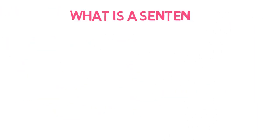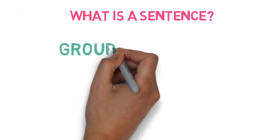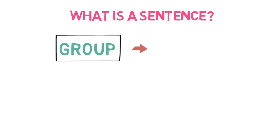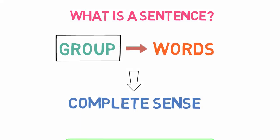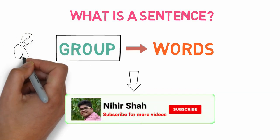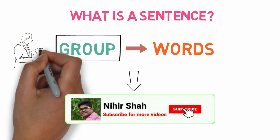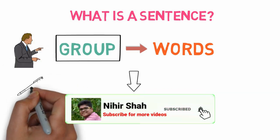What is a sentence? A sentence is a group of words that makes complete sense. Whenever we speak or write, we use words.